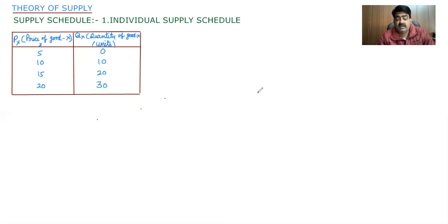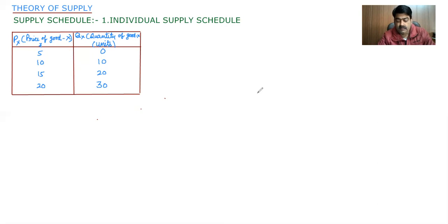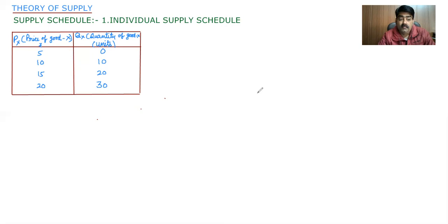This table shows that the producer is willing to sell more at a higher price. When the price of a particular good increases, the producer will be willing to sell more goods. When the price is rupees 10 per unit, quantity supplied is 10 units. When the price increases to rupees 15 per unit, the producer is willing to sell 20 units. And when the price goes up to rupees 20 per unit, the producer is willing to sell more quantity.